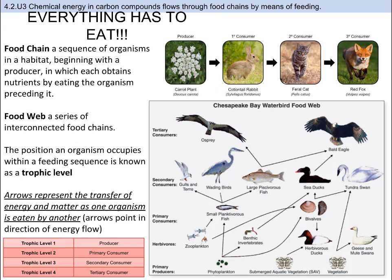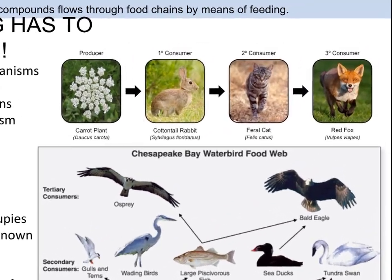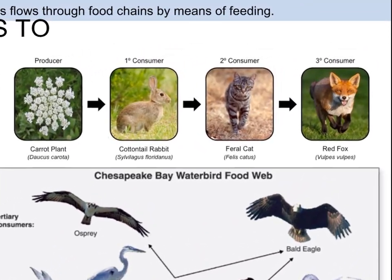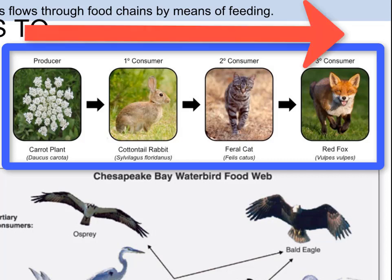Once energy gets into the ecosystem, it gets transferred between organisms. A food chain is the sequence of organisms in a habitat beginning with the producer, in which each obtains nutrients by eating the organism preceding it. The example here shows the carrot plant as the autotroph or producer, the rabbit as the heterotroph herbivore, the rabbit gets eaten by the carnivore feral cat, and that in turn gets eaten by the red fox. Energy starts from the sun, goes into the carrot plant, then to the rabbit, then to the cat, then the fox. Food chains show a very linear relationship about how energy flows.